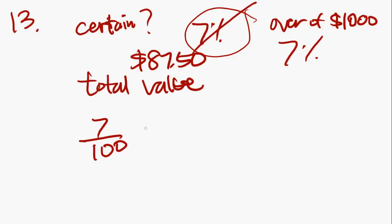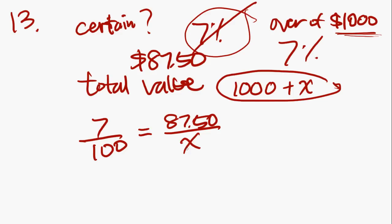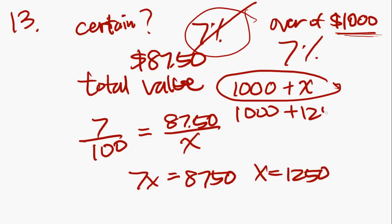You want to take this 7% and put it over 100 because it's 7% out of 100%, and set that ratio equal to 87.50 over x. This x is basically all the expenditures over $1,000. The actual number we're going to be looking for at the end is 1,000 plus x. Cross multiply: 100 times 87.50 becomes 875,000. Do division and you get x equals 1,250. 1,000 plus 1,250 equals 2,250, and that is answer C.